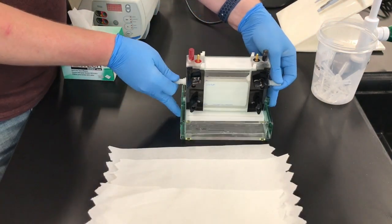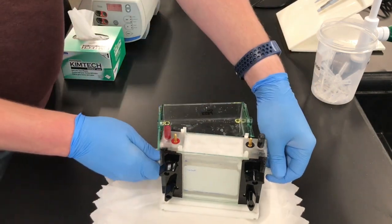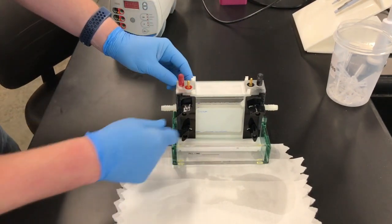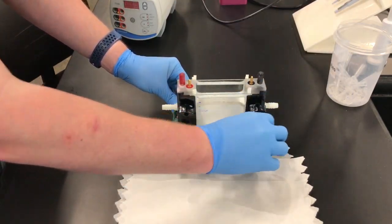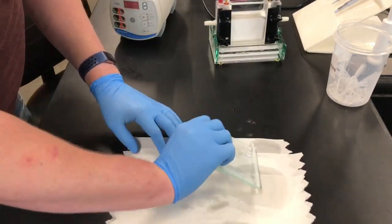Get some paper towels because this next part will be messy. Remove the apparatus and dump out the buffer in the bottom chamber. Put the apparatus back into the bottom chamber. Loosen the gel by loosening the clamps and then the buffer in the middle chamber is all going to flow out. Take out the gel and set aside.